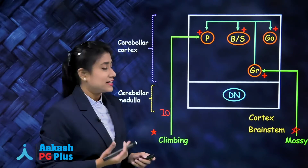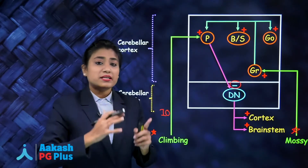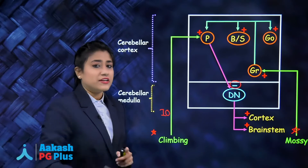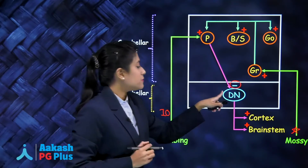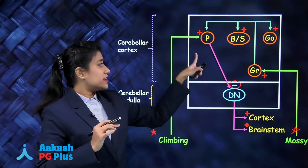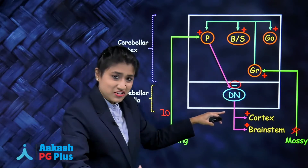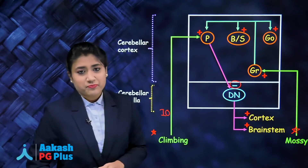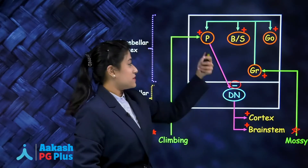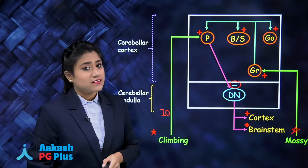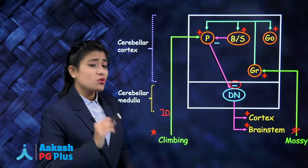Once Purkinje cells are stimulated, they inhibit the deep nuclei. Normally, when there is no Purkinje cell inhibition, the deep nuclei send excitatory fibers to the cortex and brain stem. But this excitation from the deep nuclei is inhibited by the Purkinje cells. In short: Purkinje cells inhibit the deep nuclei.